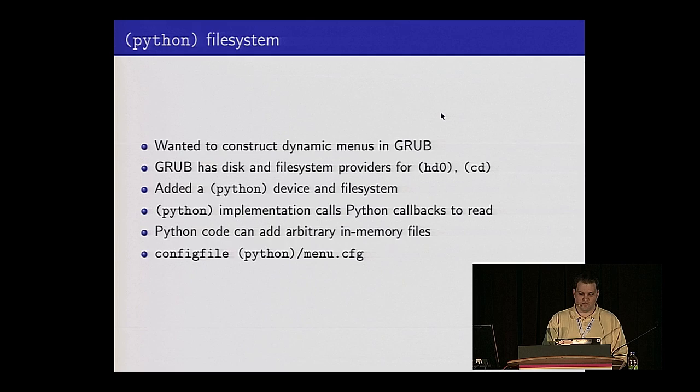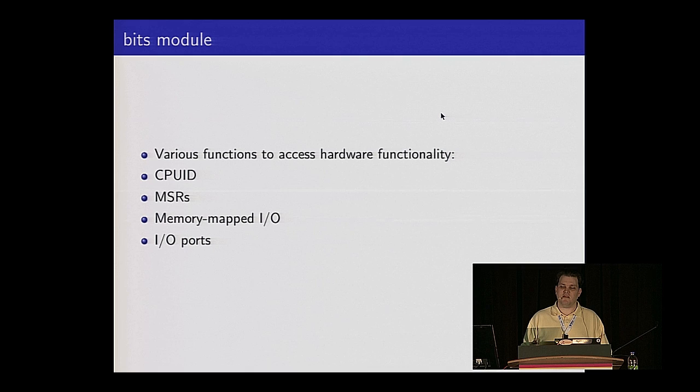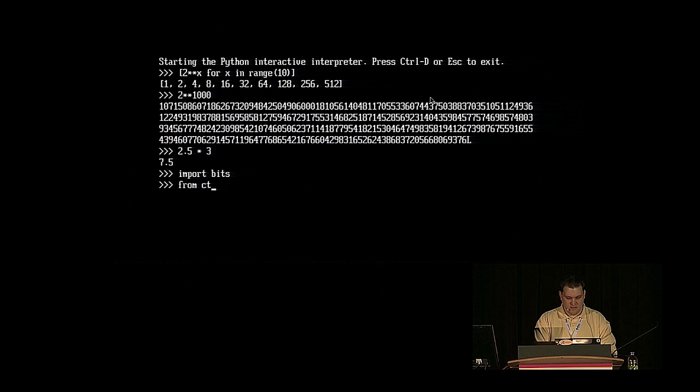So how do we handle hardware-specific functionality? We want to have things like CPU ID, MSRs, memory-mapped IO, IO ports. We've done a lot of that by adding a new module called 'bits' for our BIOS implementation test suite. Let me import bits and run. I'm also going to need the ctypes module in order to go talk to little pieces of real hardware — because we need to manipulate raw memory in ways that you wouldn't normally want to do on a live hosted system.